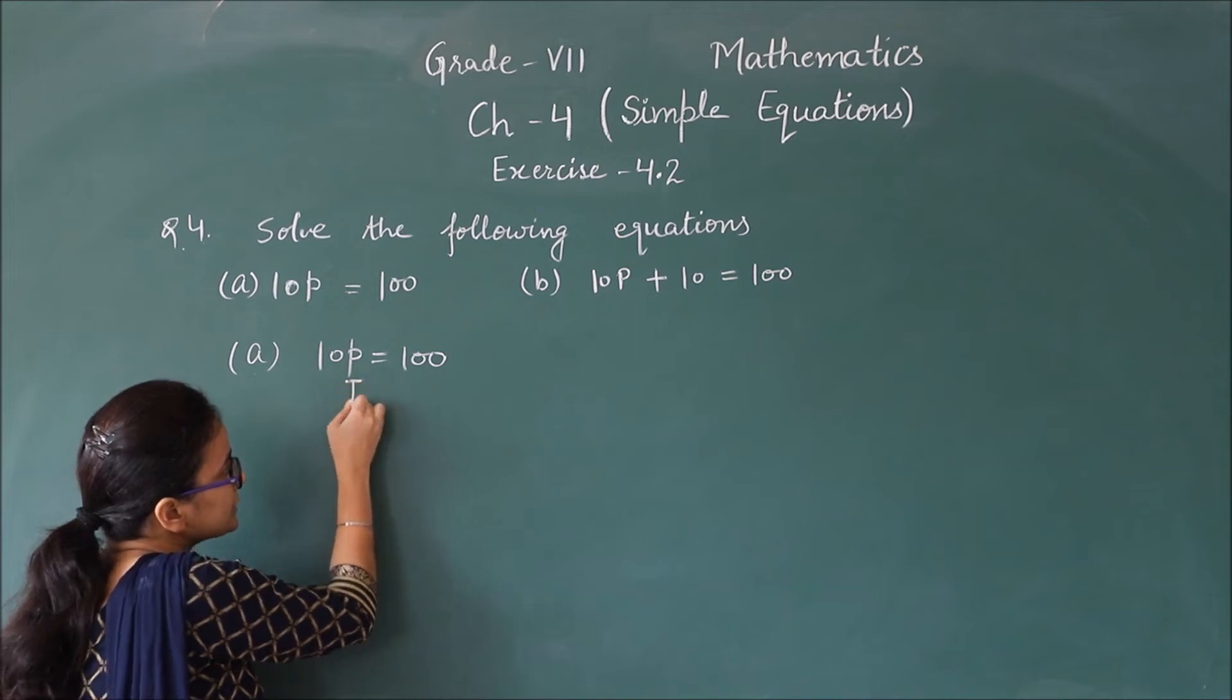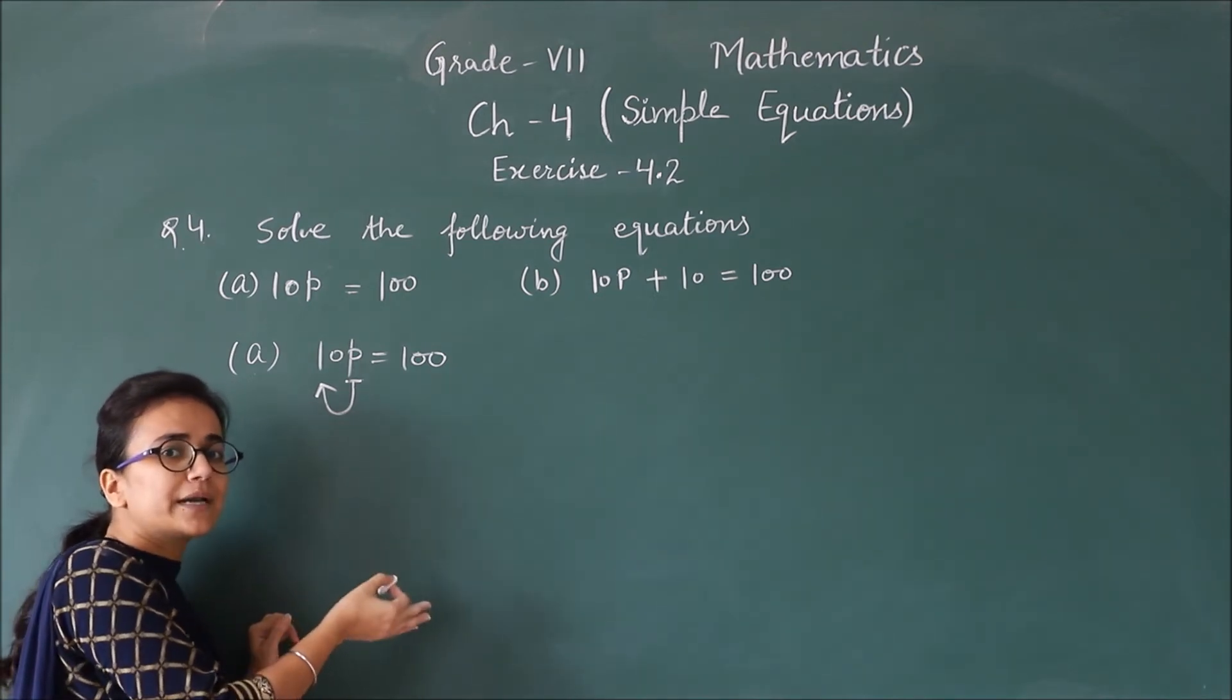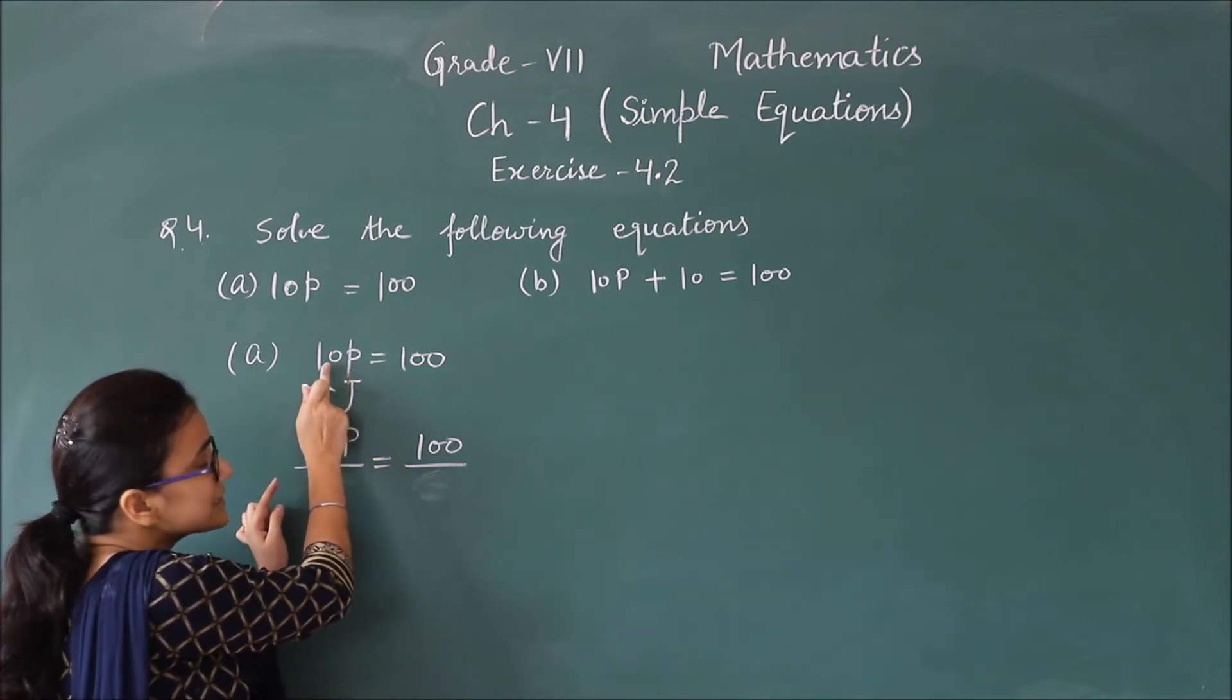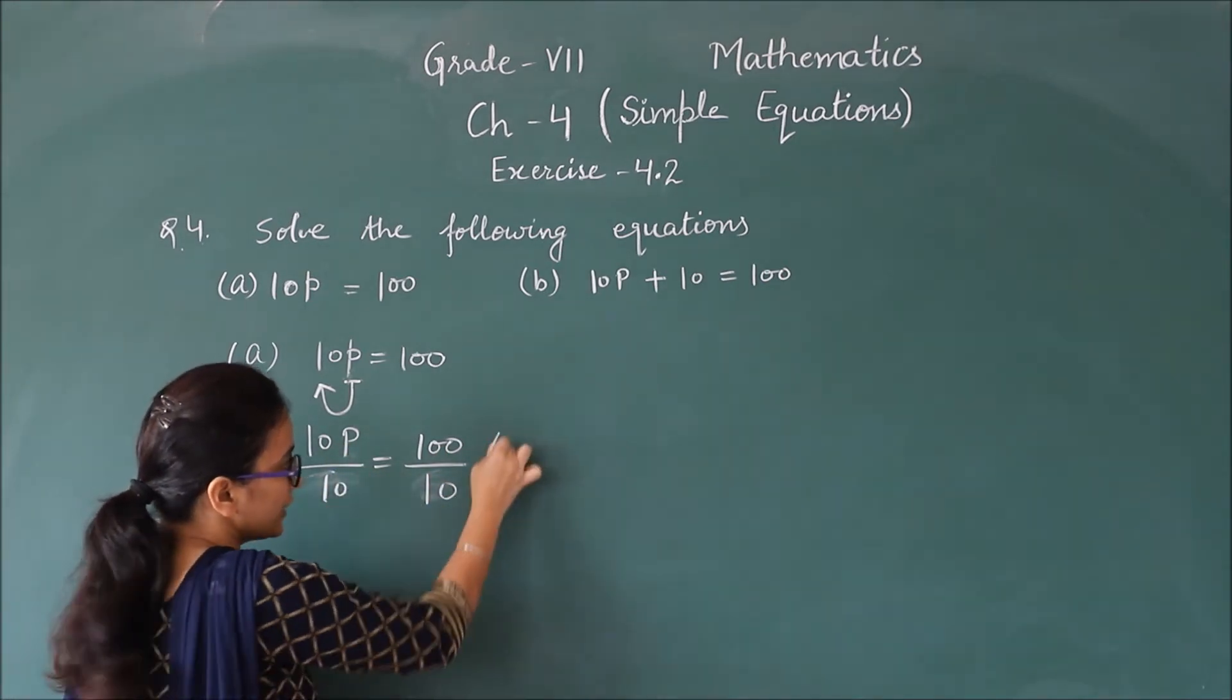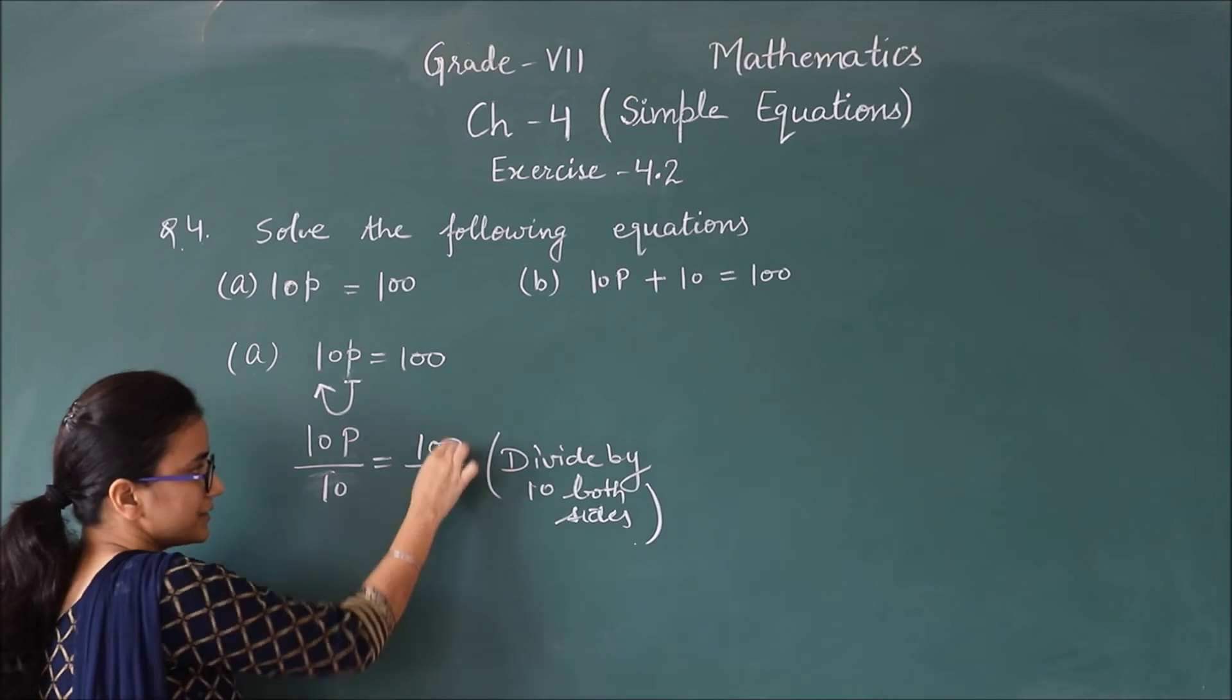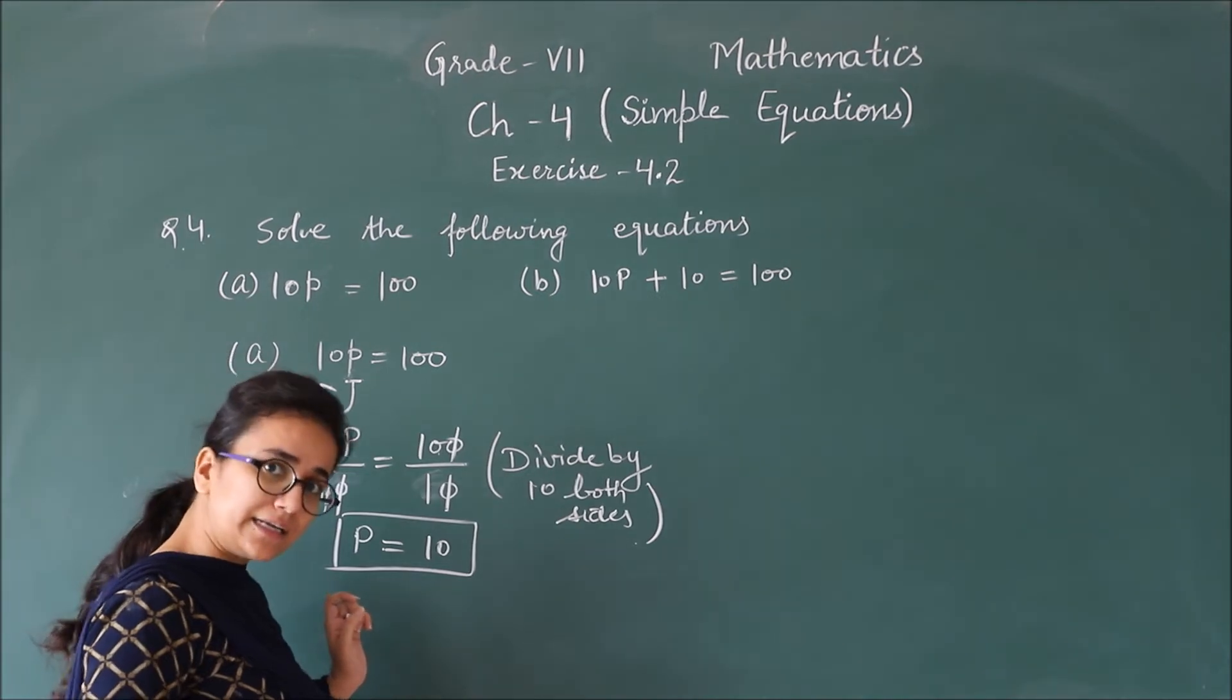10p equals 100. Now see here, with p, what is multiplied? 10. So what do we need to do? Divide by 10. 10p divided by 10 equals 100 divided by 10. Divide by 10 both sides. Clear? 10 and 10 cancel here. Here 10 and 10 cancel. What remains? P equals 10. So the value of p is 10.